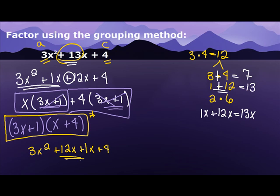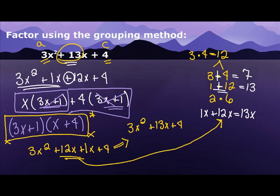Do you notice that 12x plus 1x is the same thing as what we had up here? So I end up with 3x squared. 12x plus 1x is 13x. And then plus 4. So I know I did it right. And this is the answer.